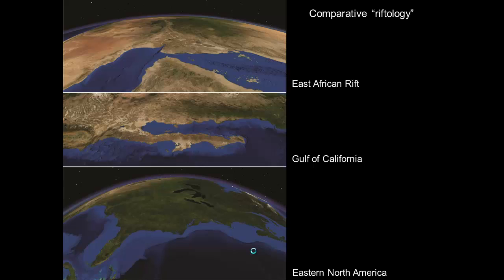When continental crust is pulled apart we call that a rift, and we can talk about comparative riftologies. Looking south along the East African Rift we see the Afar triple junction. The Gulf of California shows oblique extension pulling Baja from mainland Mexico, with the San Andreas system in the northern part as part of Pacific Plate motion. At the end of rifting we build passive margins — Eastern North America pulled apart from Western Africa 108 million years ago and has since subsided and accumulated significant sediment.